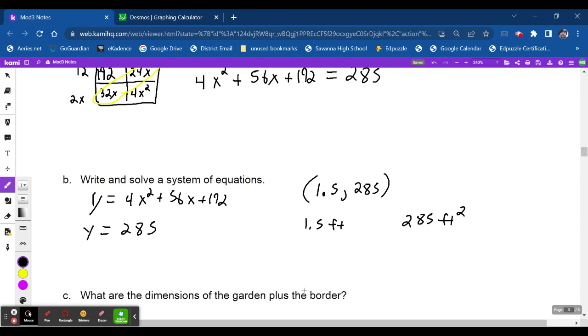So let's go back. So talking about what these points represent, we have 1.5 feet and then we have 285 square feet. So what does that mean? Well, that's what x is. So if x is this, then our area is this. And what was x? x is our path, our width of our path, across. That's our width. So our width is 1.5.